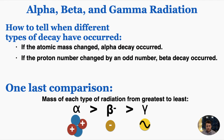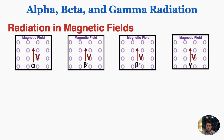Here are some general things you'll have to remember. If you're trying to figure out which type of radiation occurred: if the atomic mass changed, alpha decay occurred, and if the proton number changed by an odd number, beta decay occurred. You can also notice that the alpha particle has much more mass than the beta particle, and the beta particle has more mass than the gamma particle.